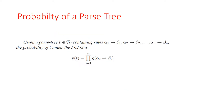Given a parse tree t from Tg containing rules α1 → β1, α2 → β2, up to αn → βn, the probability of t under the PCFG is given as the product of q terms — the product of conditional probabilities of the rules contained in that particular tree t.